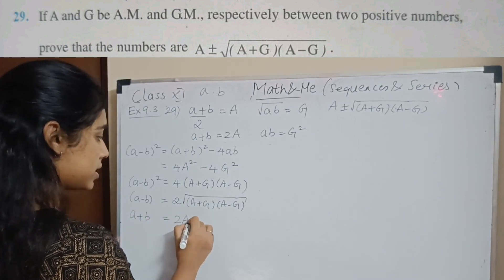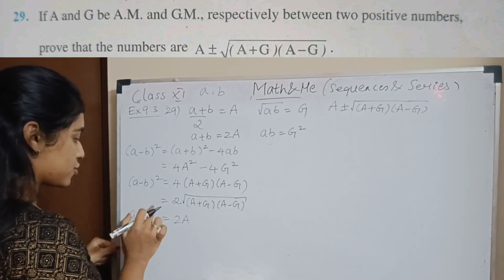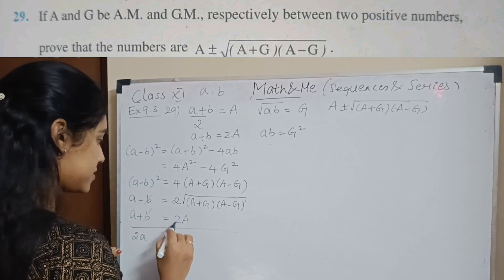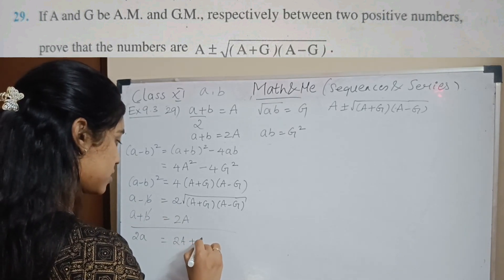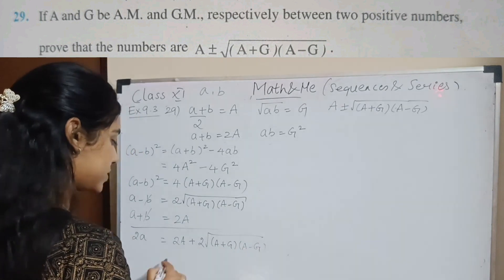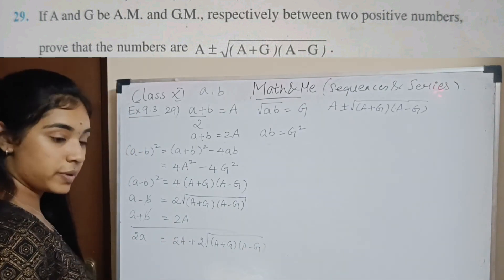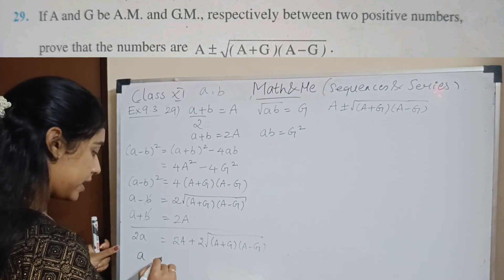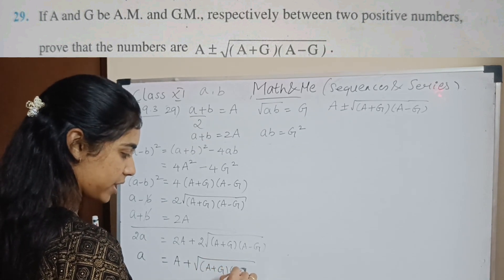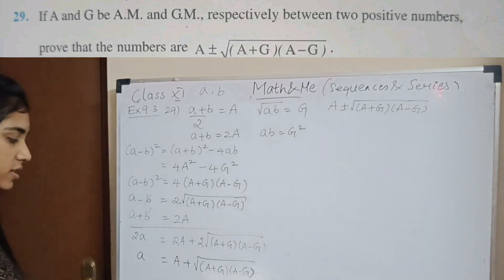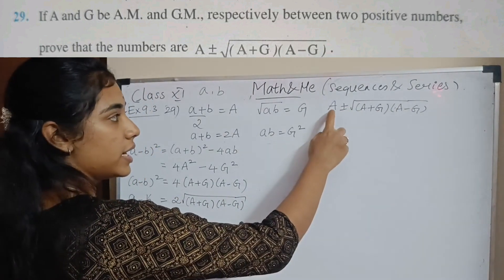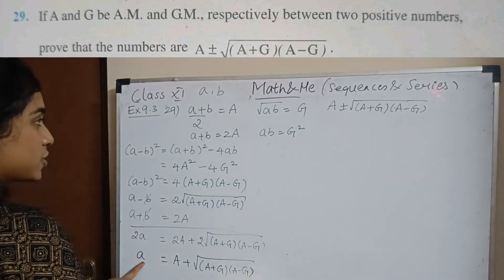We have A minus B equals root of (A+G)(A-G) and A plus B equals 2A. Adding these two equations, B cancels and we get 2a equals 2A plus 2 root of (A+G)(A-G). Dividing by 2, a equals A plus root of (A+G)(A-G). So one of the numbers is A plus root of (A+G)(A-G).